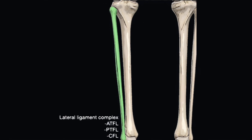The lateral malleolus provides attachment sites for the anterior talofibular, the posterior talofibular, the posterior tibiofibular, and the calcaneofibular ligaments — otherwise known as the lateral ligament complex, which is typically implicated in a lateral ankle sprain injury. The lateral malleolus also provides an attachment site for the superior fibular retinaculum.